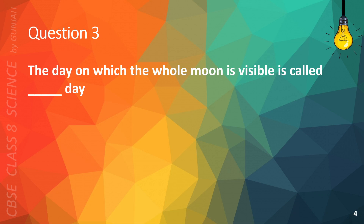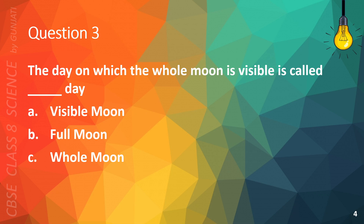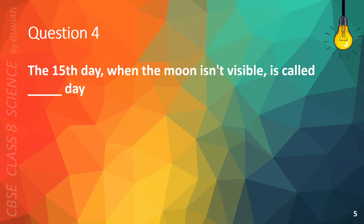Question 3. The day on which the whole Moon is visible is called blank day. A. Visible Moon, B. Full Moon, C. Whole Moon, or D. Old Moon. The correct answer is B. Full Moon.